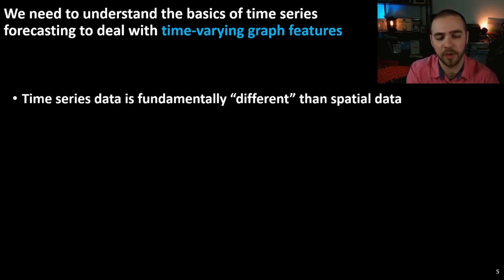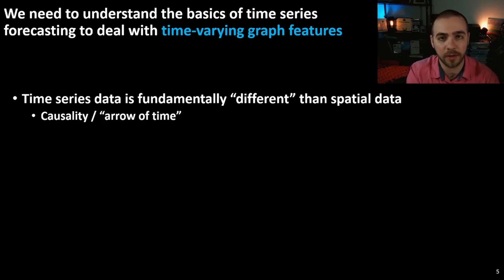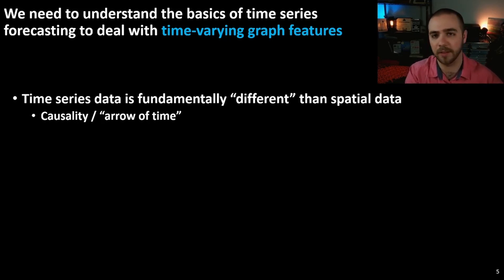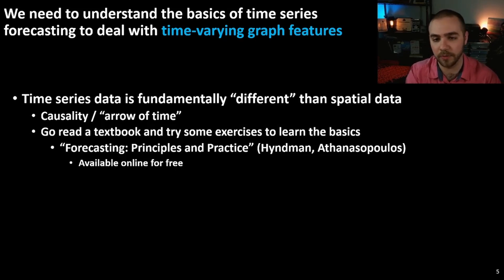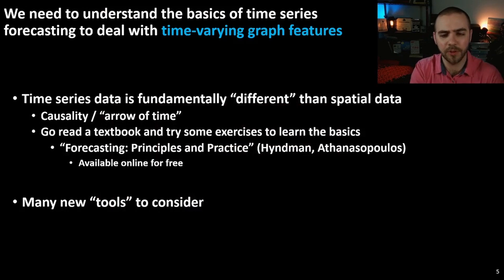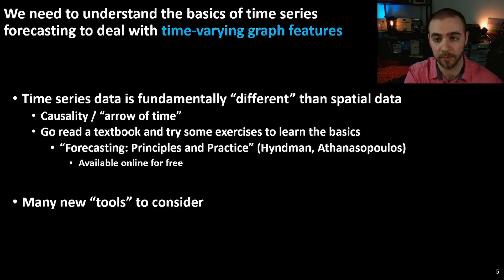To answer this question, we first need to understand some basic tools from time series forecasting. Time series data is fundamentally different from spatial data or IID data, because you have this notion of causality — the arrow of time. Basically, data in the past will be highly correlated with future values. You can't just use an IID assumption. I'd recommend going and reading a textbook on this topic; there's an excellent one called Forecasting: Principles and Practice, available for free online, which I think is amazing.